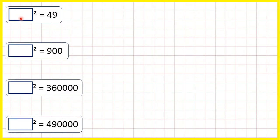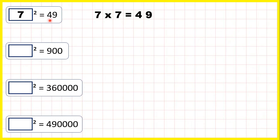Now, what squared is 49? Well, 7 times 7 is 49, so 7 squared is 49. What we've done here is found the square root of 49. We can say the square root of 49 is 7, because 7 squared is 49.